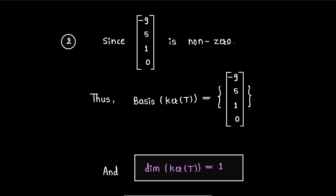Therefore, basis of the kernel T will be this singleton vector [-9, 5, 1, 0]. Now, since basis of kernel T contains only one vector, therefore, dimension of kernel T will be 1. And this completes the solution of given question.